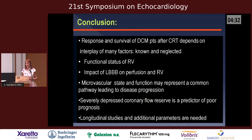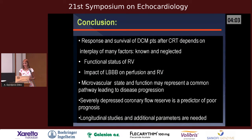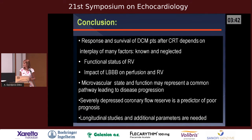In conclusion, response and survival after CRT depend on the interplay of many factors — some known, some neglected. Right ventricular functional status deserves more attention when planning CRT. We must calculate the impact of left bundle branch block on perfusion and the right ventricle. The microvascular state is a common pathway leading to disease progression, and severely depressed coronary flow reserve is a predictor of poor prognosis — though longitudinal studies and additional research are still needed.